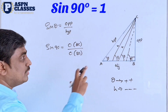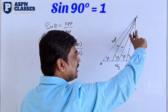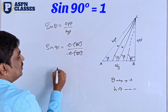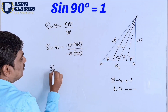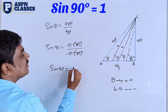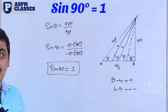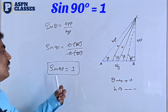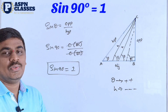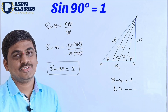The hypotenuse at 90 degrees is the same line, so if opposite equals hypotenuse, then we get the answer: sin(90°) equals opposite divided by hypotenuse equals 1. So we get the answer 1. See you in the next video.